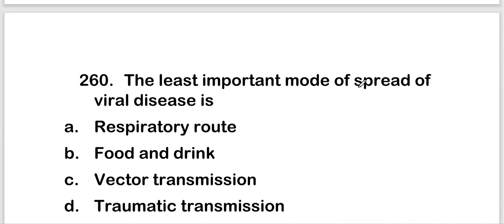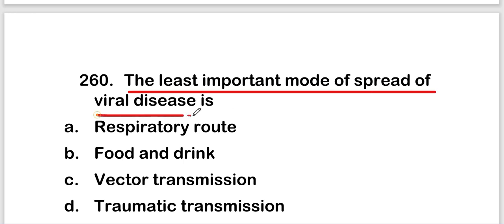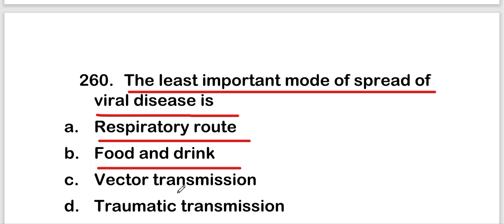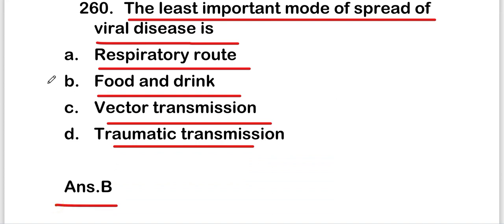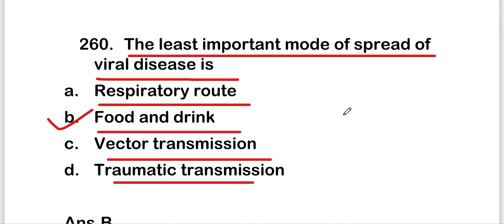The last question: the least important mode of spread of viral disease is respiratory route, food and drink, vector transmission, or traumatic transmission? The right answer is option B — food and drink is the least important mode of spread of viral disease. These are all 20 questions of this video — thank you for watching.